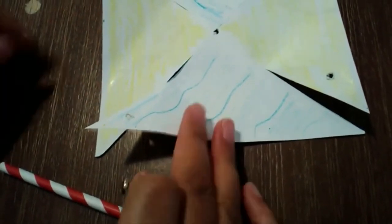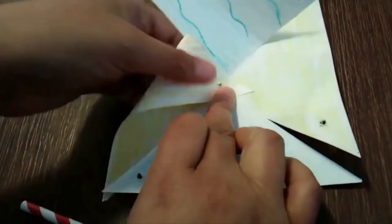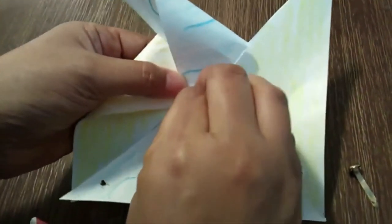Once you've done that, you're going to gently take the corners with the holes and bring them to the center of the pinwheel. You might need a grown-up to help you with this step.